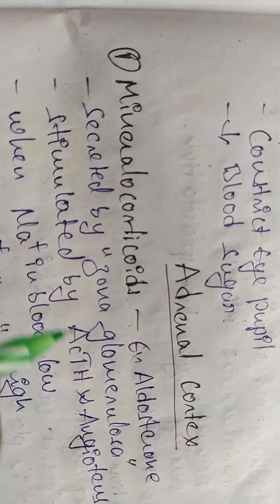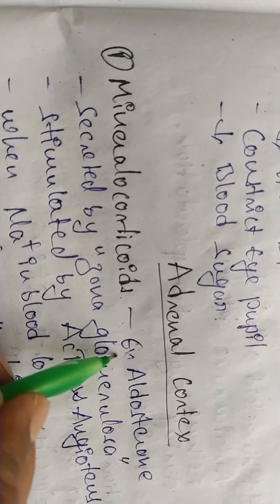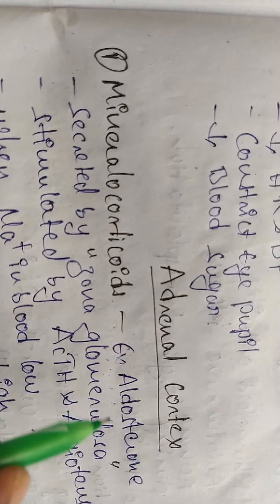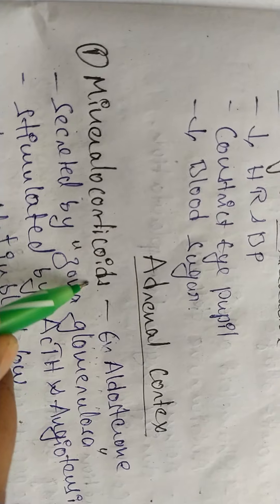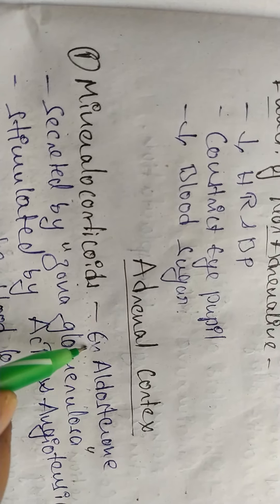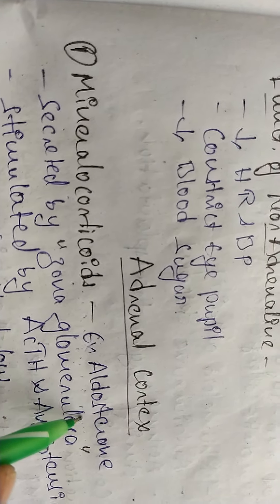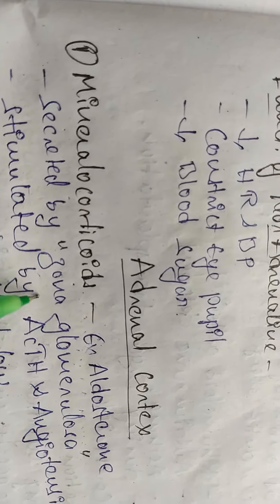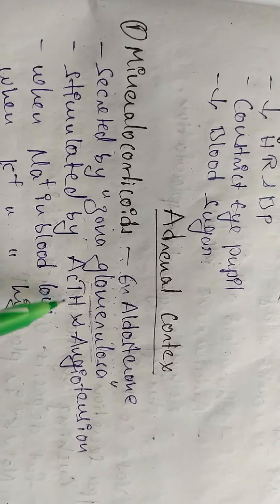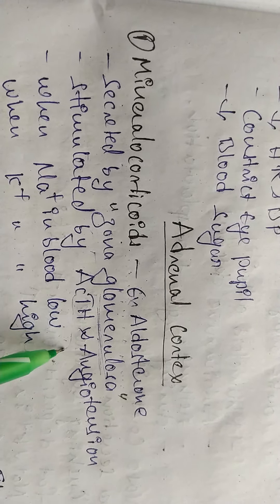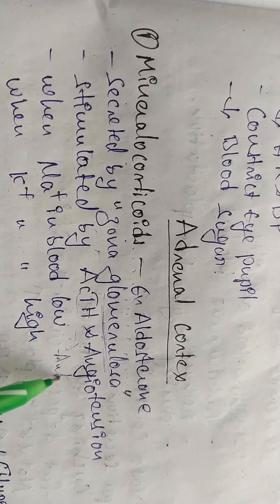The first group of hormones is the mineralocorticoids. Examples include aldosterone and deoxycorticosterone. These are secreted by the zona glomerulosa, which is the first layer present in the adrenal cortex. They are stimulated by adrenocorticotrophic hormone (ACTH), which is released from the anterior pituitary.